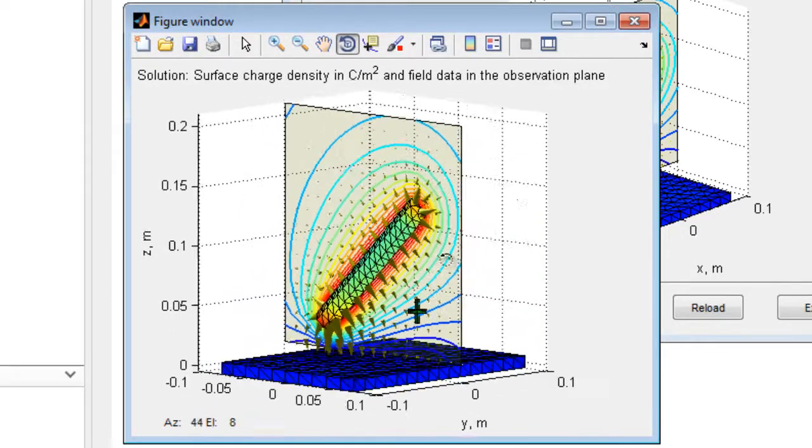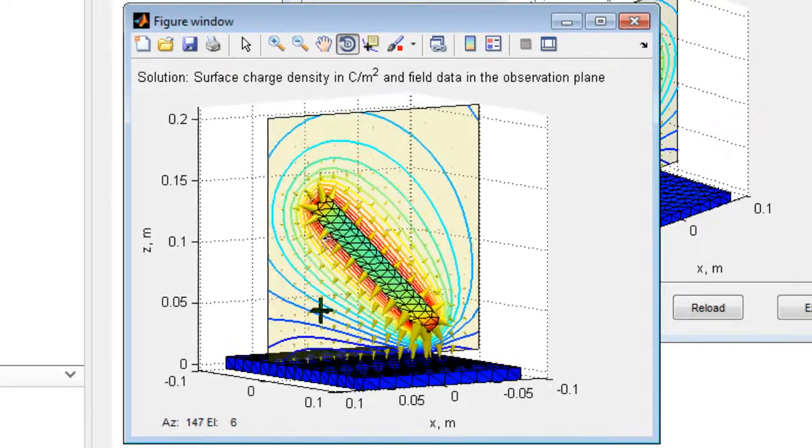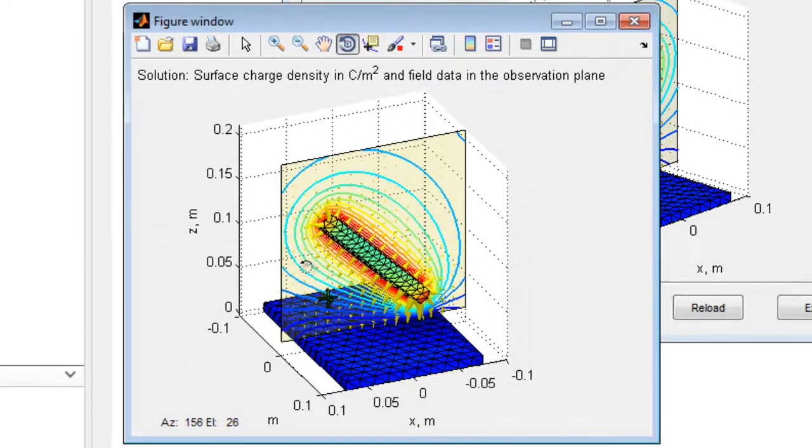Here, the electric field and electric potential, or equipotential surfaces, are displayed. Also, the surface charge density is displayed on the surface of the metal conductor.